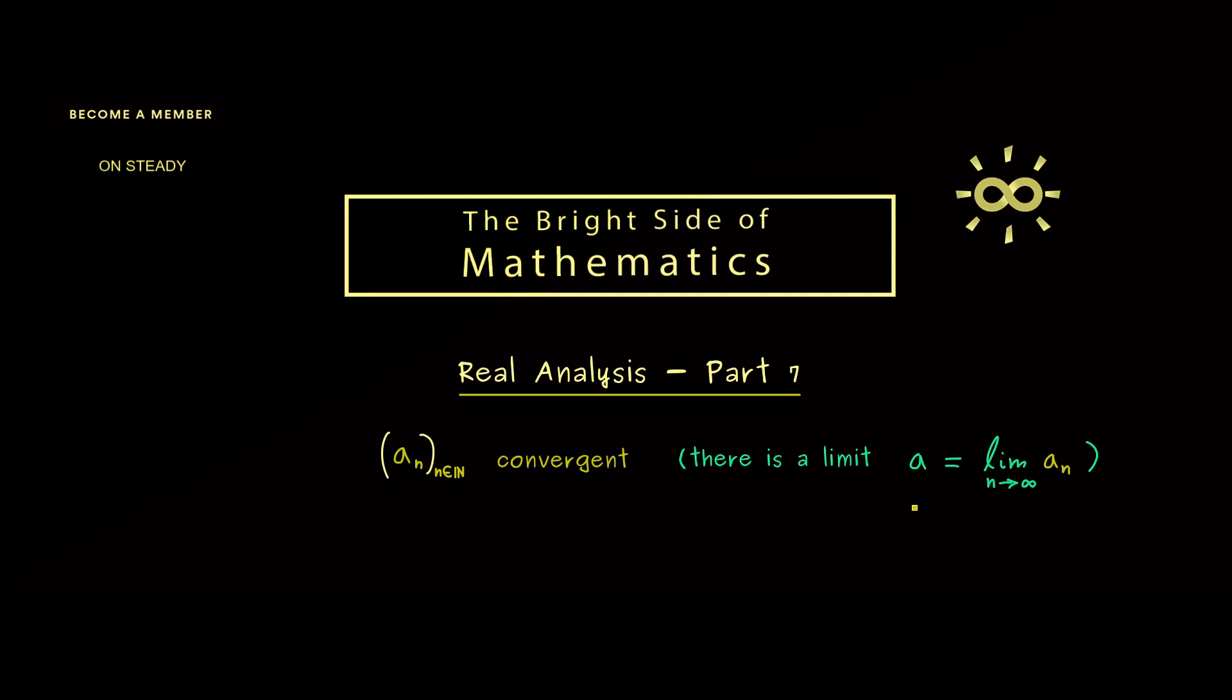Now the problem with this definition is that you need to know the limit to show convergence. Simply because we measure the distance to this a. Hence there is a different idea or a different property a sequence can have which does not need such a number a in the definition.